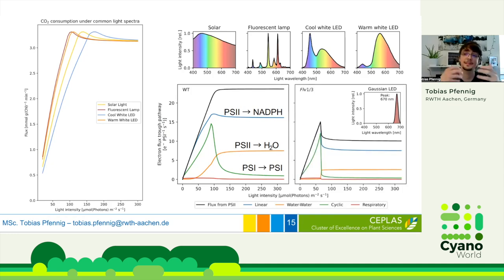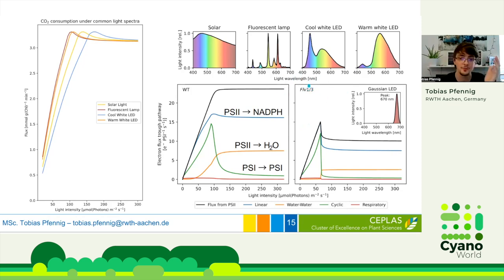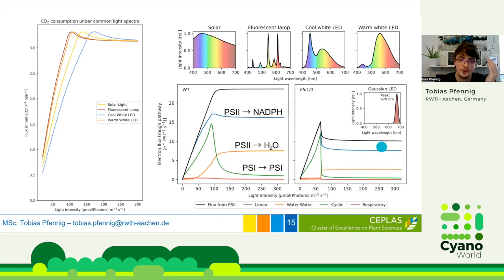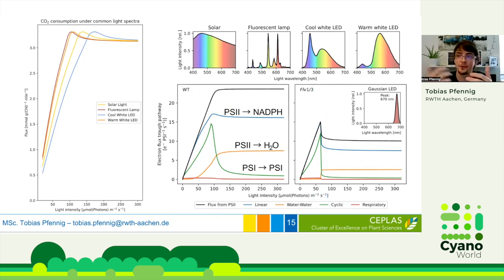We can also predict these pathways for simulated mutants. Here you see a high-light-adaptive flavodiiron protein, which is a major player in the water-water cycle. In this mutant, the water-water cycle is strongly reduced, and at high light the whole electron flow gets impaired — which makes sense for a high-light-adaptive protein.